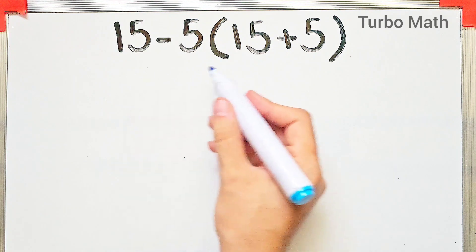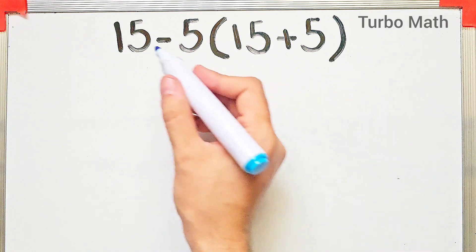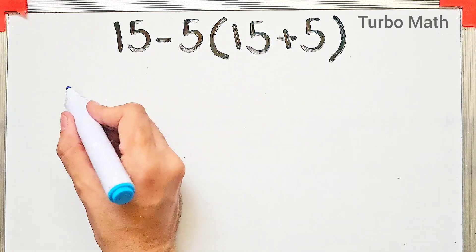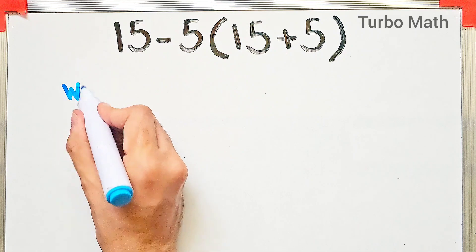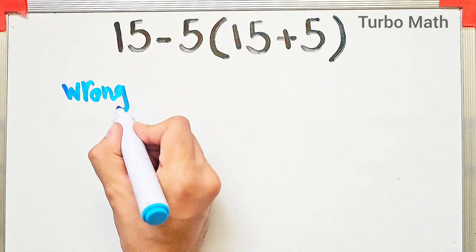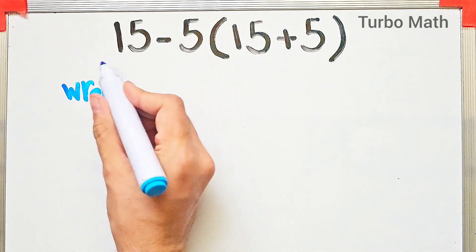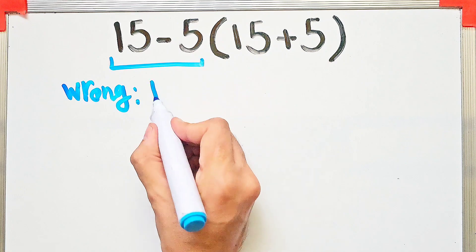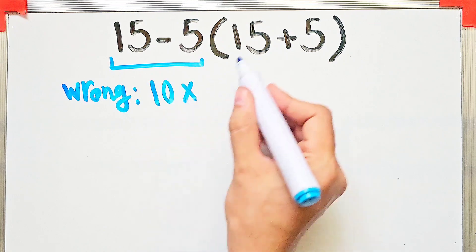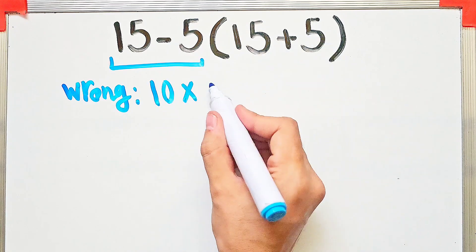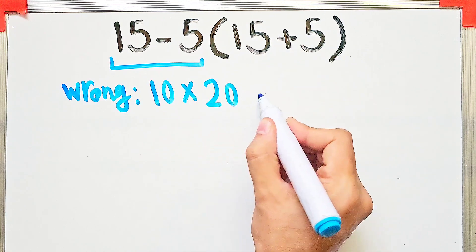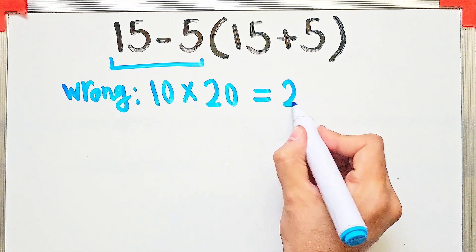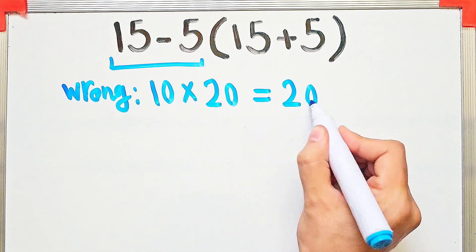Hi friends, welcome to Turbo Math channel. Consider the expression: 15 minus 5, then times 15 plus 5. What is the answer? In the wrong way of solving this, some people start from the left and simplify: 15 minus 5 equals 10, then 10 times 15 plus 5, which equals 10 times 20, equals 200. But this answer is definitely wrong.